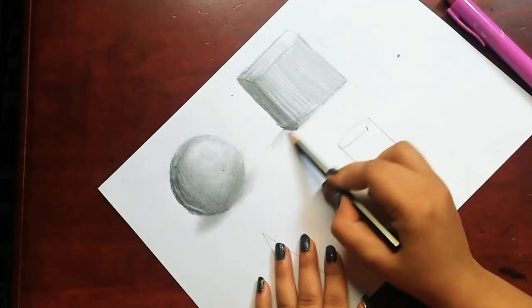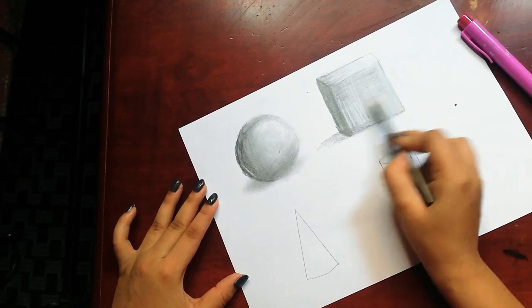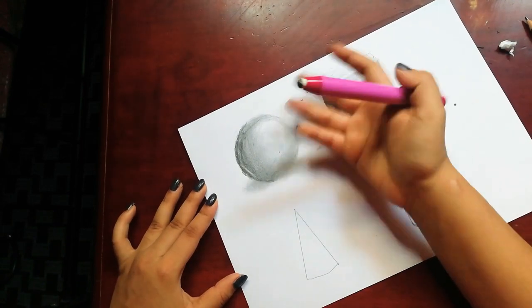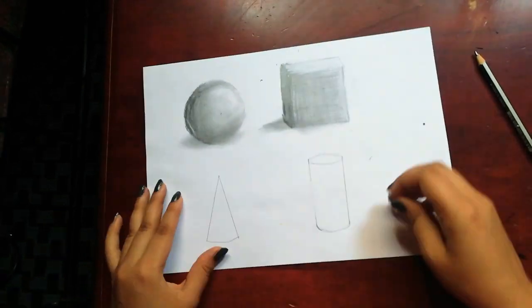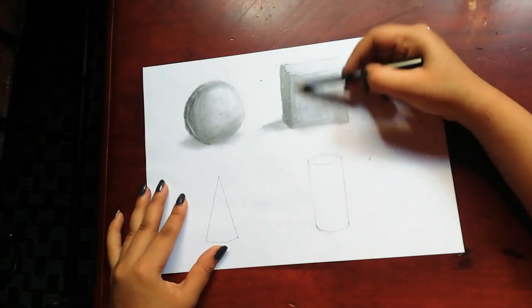There's a core shade which you can see, the darker shade. The midtone will be in the front, and then on the top will be the highlight. The cast shadow will be in the corner.